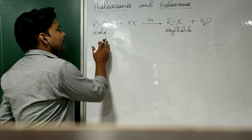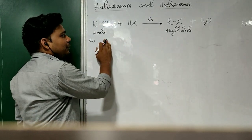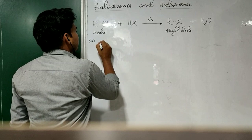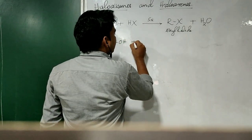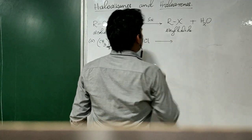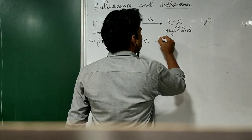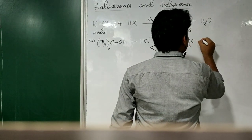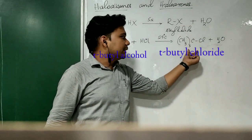In order to prepare a tertiary alkyl halide, let us consider tertiary butyl alcohol as the substrate. When treated with a halogen acid, we will get the corresponding tertiary butyl halide. Let us consider concentrated HCl as our hydrohalic acid. The reaction of halogen acid with tertiary alcohols occurs smoothly even at room conditions, around 25 degrees Celsius, giving tertiary butyl chloride along with water.